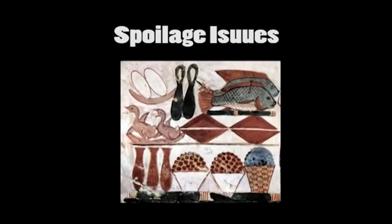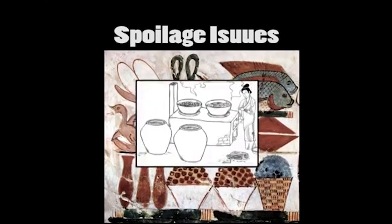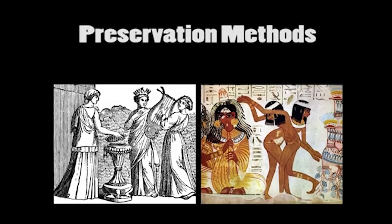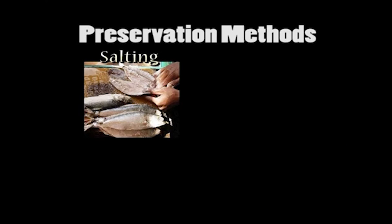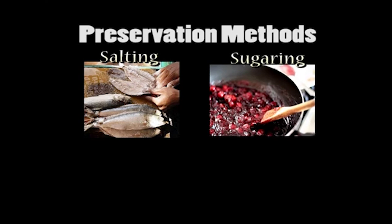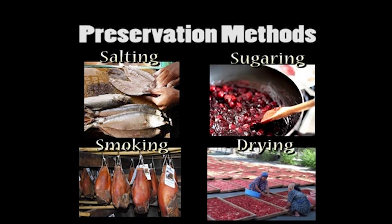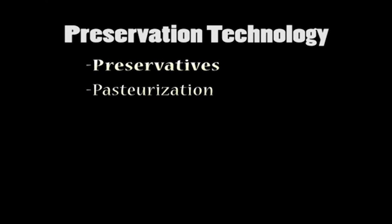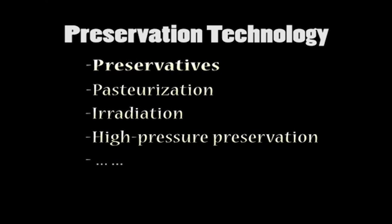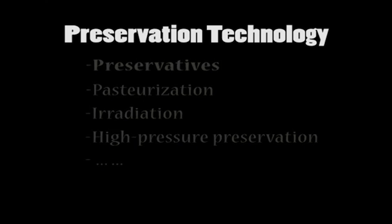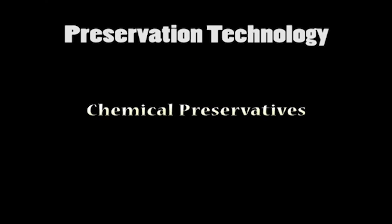Food spoilage has been an issue for humans for a very long time. Ancient Romans and Egyptians used basic methods of preserving foods — such as salting, sugaring, smoking and drying — in order to keep them from rotting. With the development of science and technology, we have discovered more effective techniques of preserving food, in particular the development of chemical preservatives.